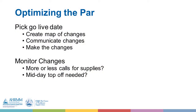In determining if you should keep an item or not, it's very important to work with the nurse managers or the nurses on that unit to determine if this is a critical item that needs to stay on the PAR, or if it can be removed and delivered upon demand. After we've established this current state and documented it, we need to pick a go-live date, create a map of the changes we'll make, communicate that these changes will be happening, make the changes, and continue to monitor.